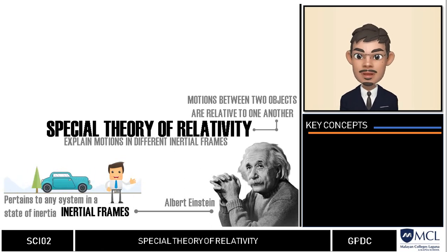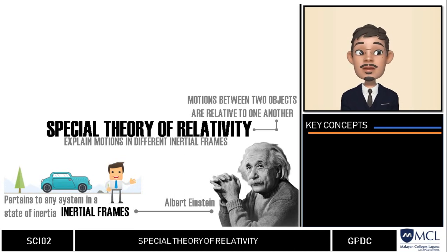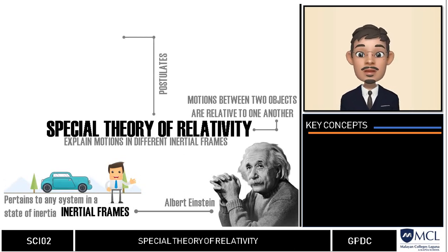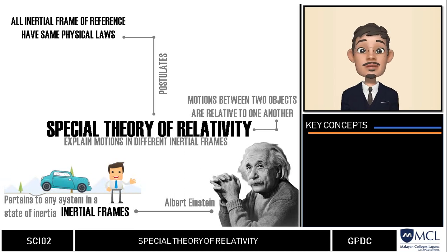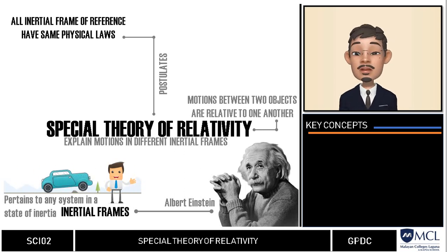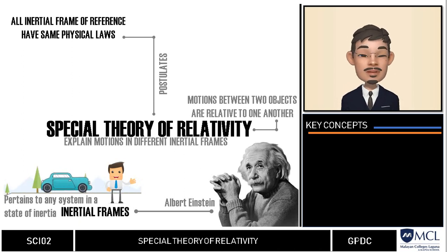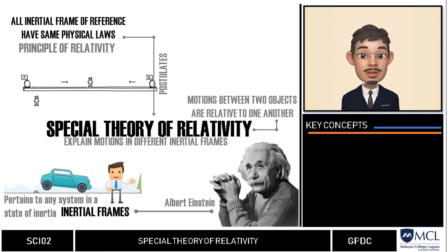But generally, the special theory of relativity has only two postulates. First: the physical laws have the same mathematical form for all frames of reference moving at a constant velocity with respect to each other. This idea is simply known as the principle of relativity.